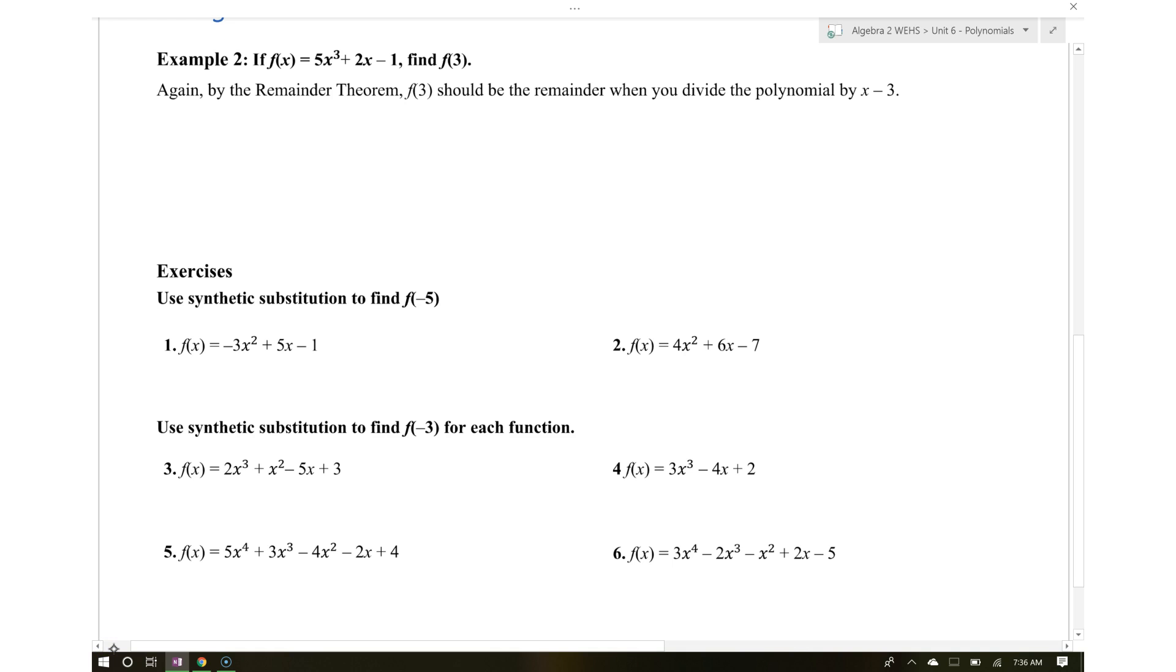In example 2, we're evaluating f of 3, meaning we want to find f of 3 when x equals 3. Write 3 on the side, then list the coefficients. The polynomial has highest power 3, and the next power shown is 1. We're missing the x squared term, so we need to account for that.